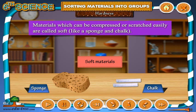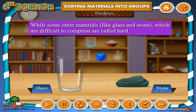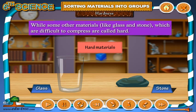The materials which can be compressed or scratched easily are called soft, like a sponge and chalk. While some other materials like glass and stone, which are difficult to compress, are called hard.